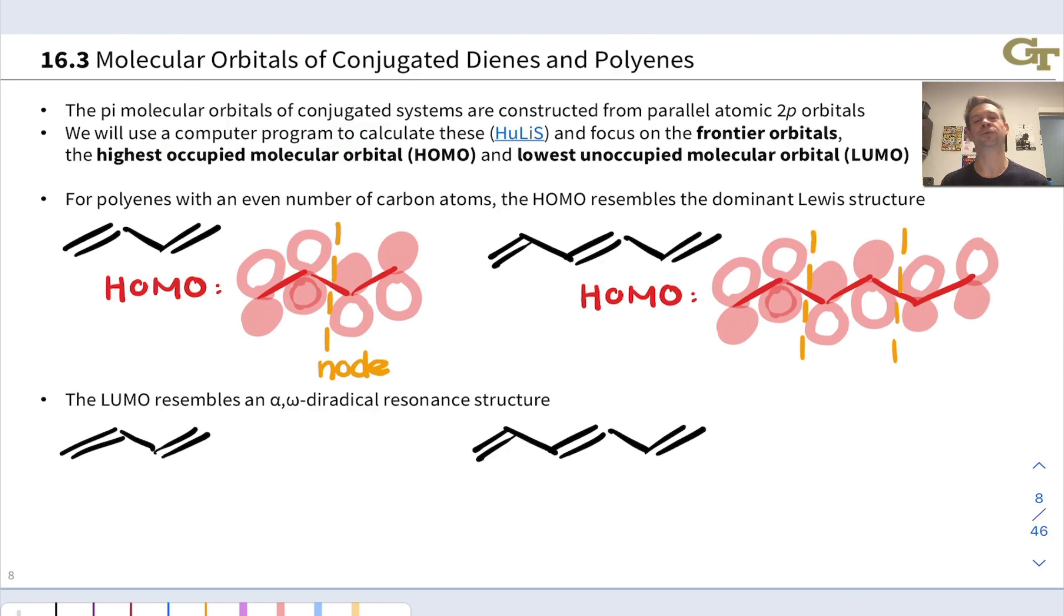The LUMOs also follow a pattern. It's a little bit more complicated to get a handle on, but it will make sense, particularly once we compare it to the HOMOs. The LUMO resembles what we might call an alpha-omega diradical structure. For 1,3-butadiene, we have now destructive interference or a node where we see each double bond and constructive interference in the middle.